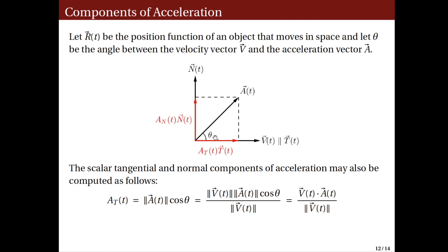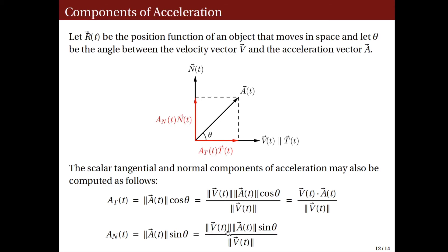Similarly, taking the sine of theta gives the length of the normal projection over the hypotenuse, and since N is a unit normal vector, a sub N equals the norm of A of t times sine theta. Introducing the factor norm of V over norm of V, the numerator becomes the norm of the cross product of V and A. Hence, the normal component of acceleration can be written as the norm of the cross product of velocity and acceleration over the norm of the velocity. This gives us alternative formulas for the tangential and normal components using only the velocity and acceleration functions, and notably the formula for the normal component does not require computing curvature kappa directly.